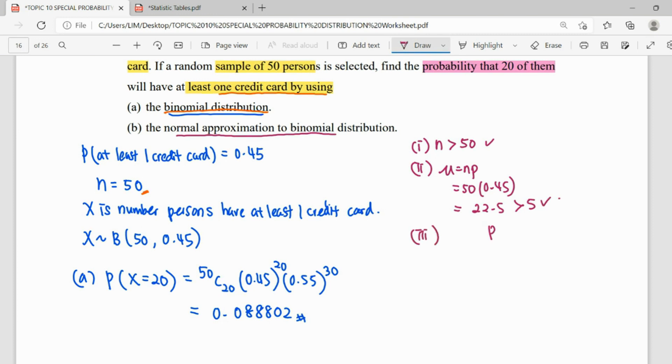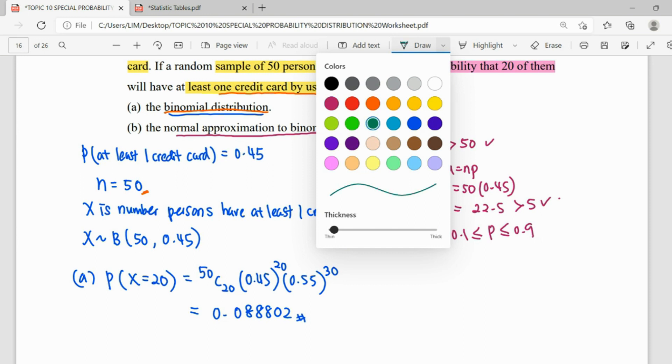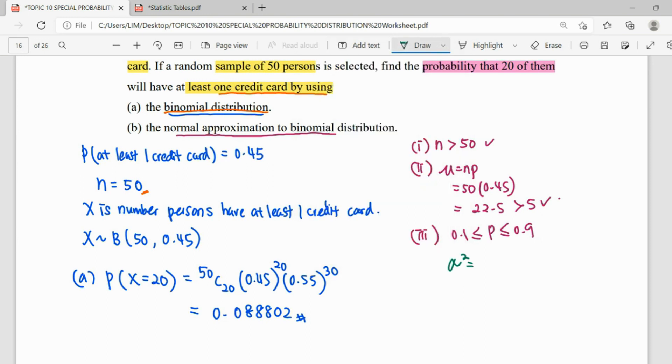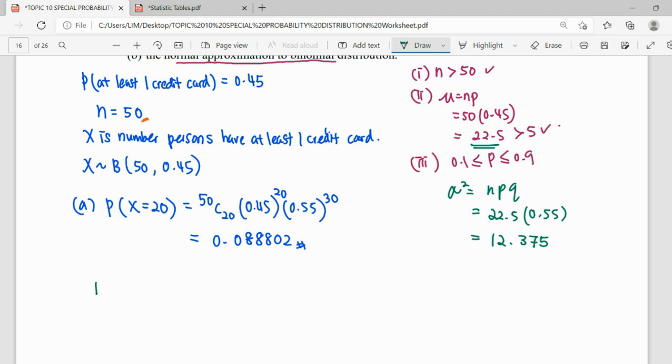Third situation, the probability is between 0.1 and 0.9. So here we have our mean already. What we need to do is find our variance. Variance is npq. So np is 22.5, q is 0.55. So this variance gives us 12.375. So our question B, X is distributed normal with mean 22.5, variance 12.375.